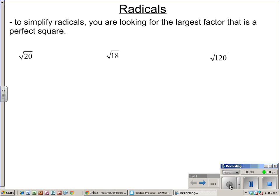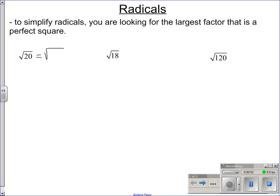To do that, what you're looking for, as it says, is the largest factor of the number you're taking the square root of that is a perfect square. So, looking at the first example here, square root of 20. 20 is 4 times 5. 4 is a perfect square. It's the largest factor of 20 that is a perfect square.